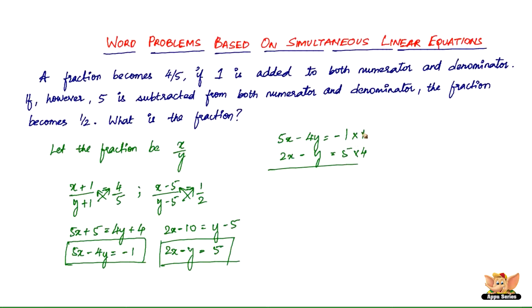So 1 minus 1 multiplied by minus 1 is minus 1. 1 multiplied by minus 4y is minus 4y. 1 multiplied by 5x is 5x. So here we've got 4 times 5 is 20. 4 times minus y is minus 4y. 4 times 2x is 8x. So now we've got the coefficients of y equal to eliminate, but we need to subtract them because the signs are same. So change the signs.